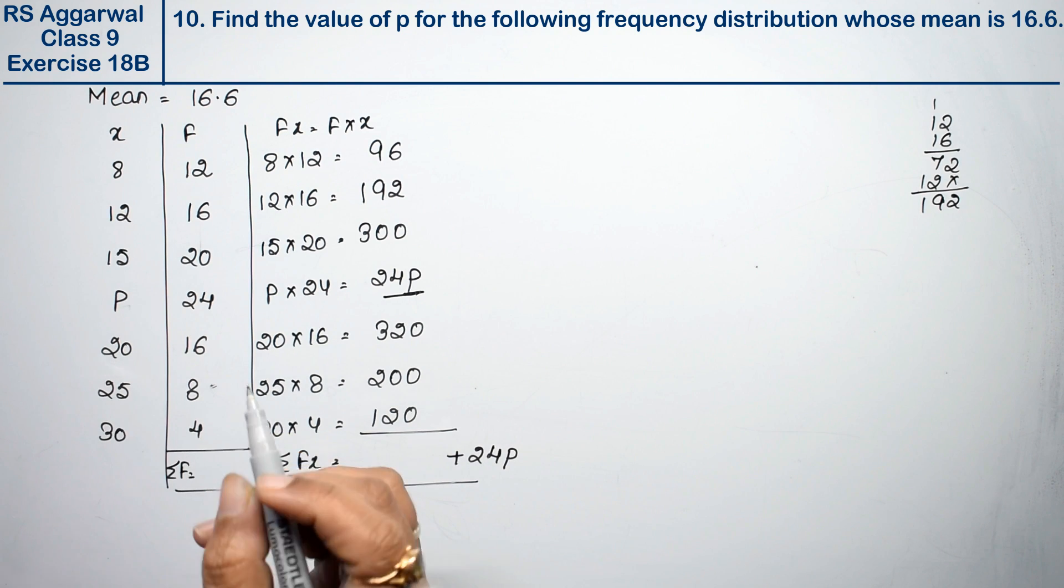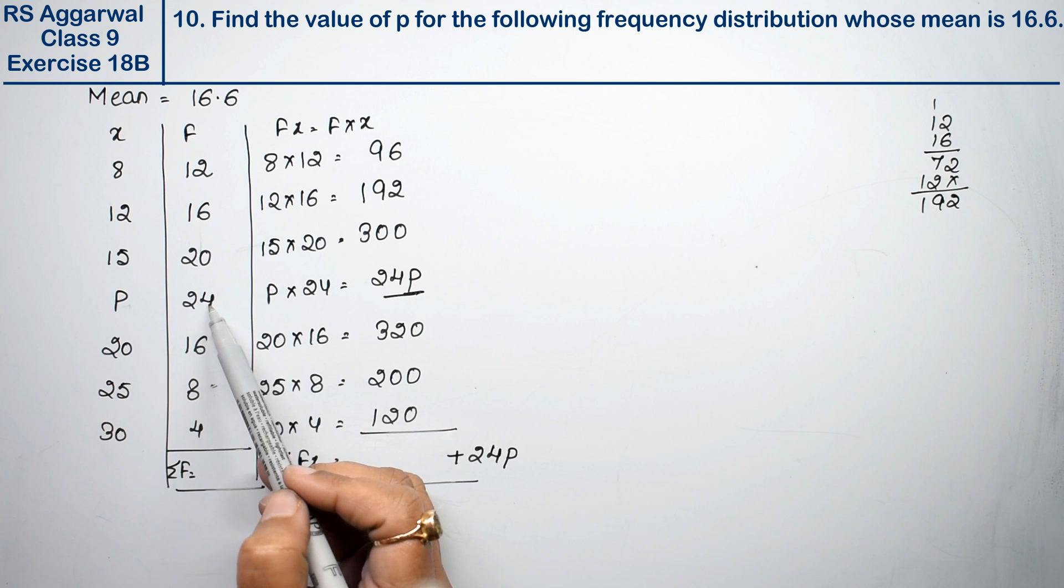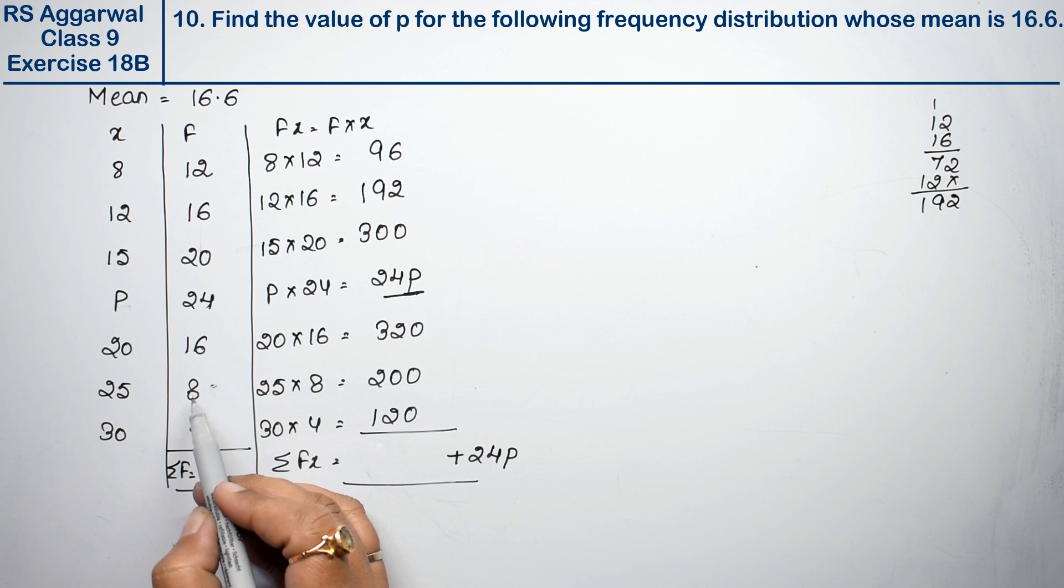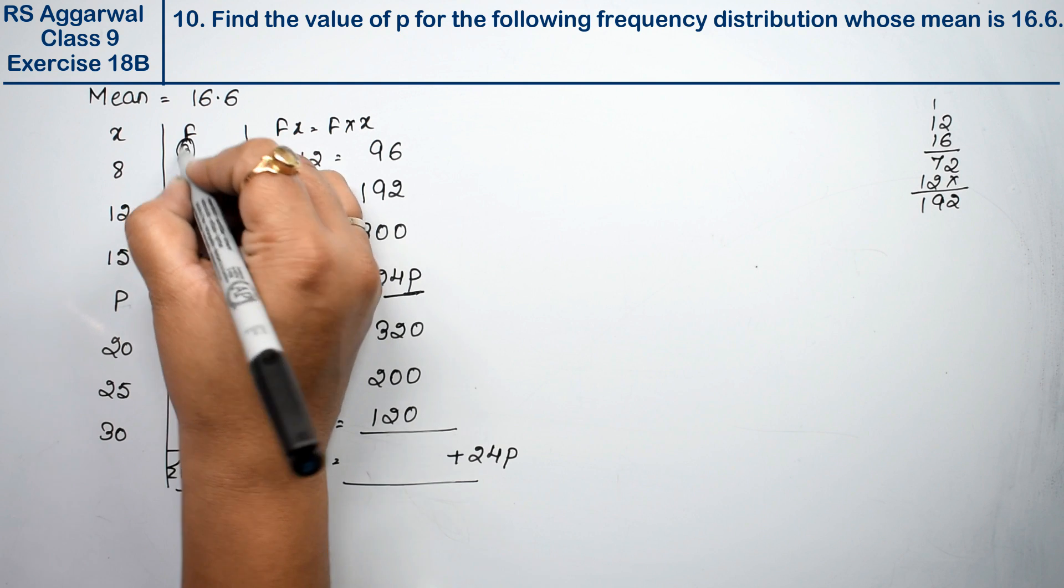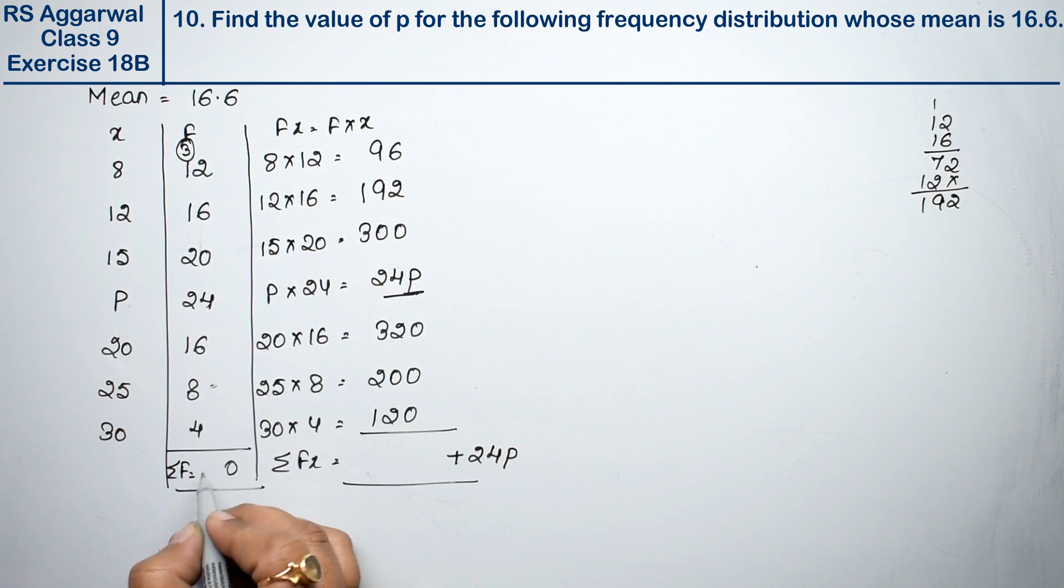Adding all the frequency values systematically: 12 plus 16 plus 15 plus 24 plus 16 plus 8 plus 4, counting through each step, equals 100.